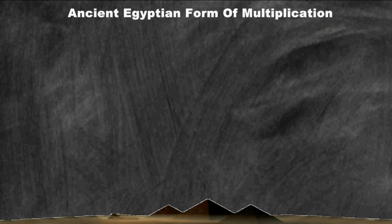To find the product of two different numbers, the ancient Egyptians used a form of multiplication by using doubling. To show how the ancient Egyptians used the doubling method, we are going to use an example.